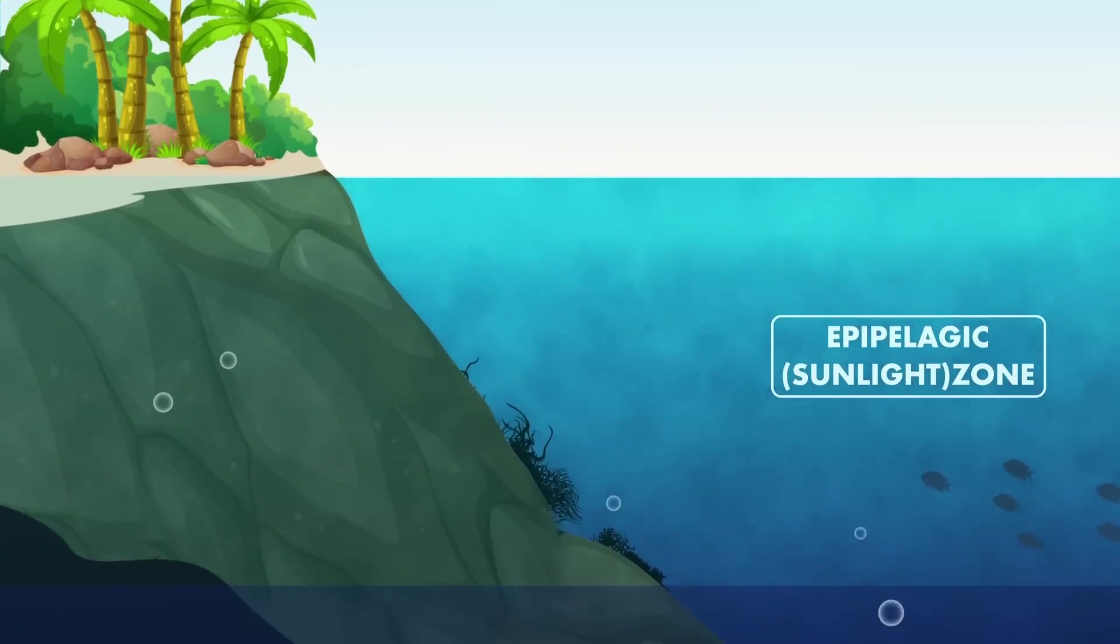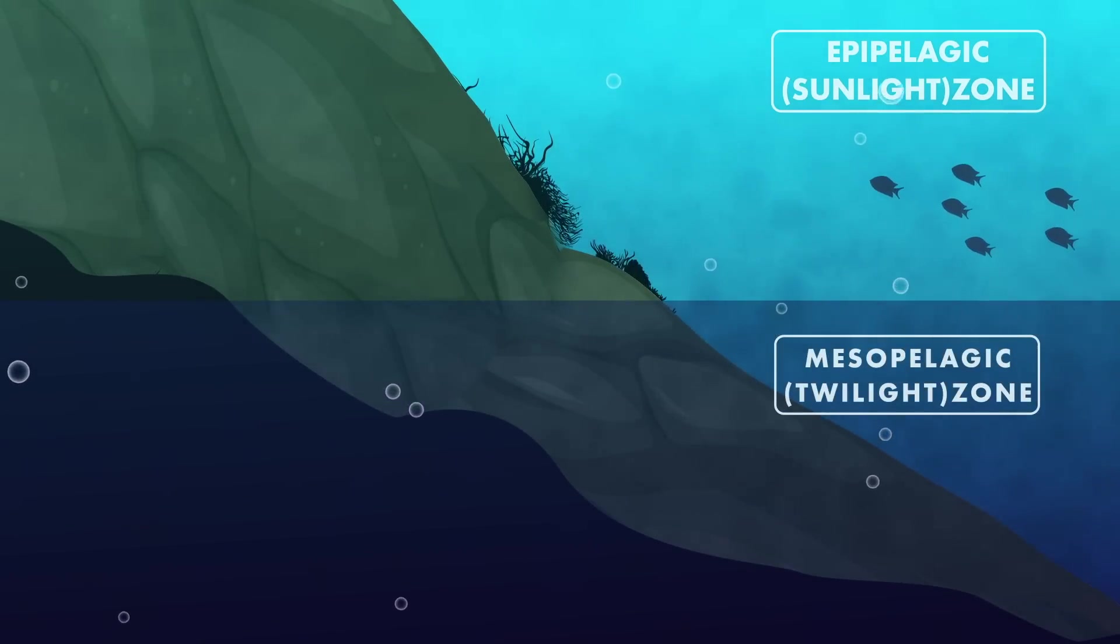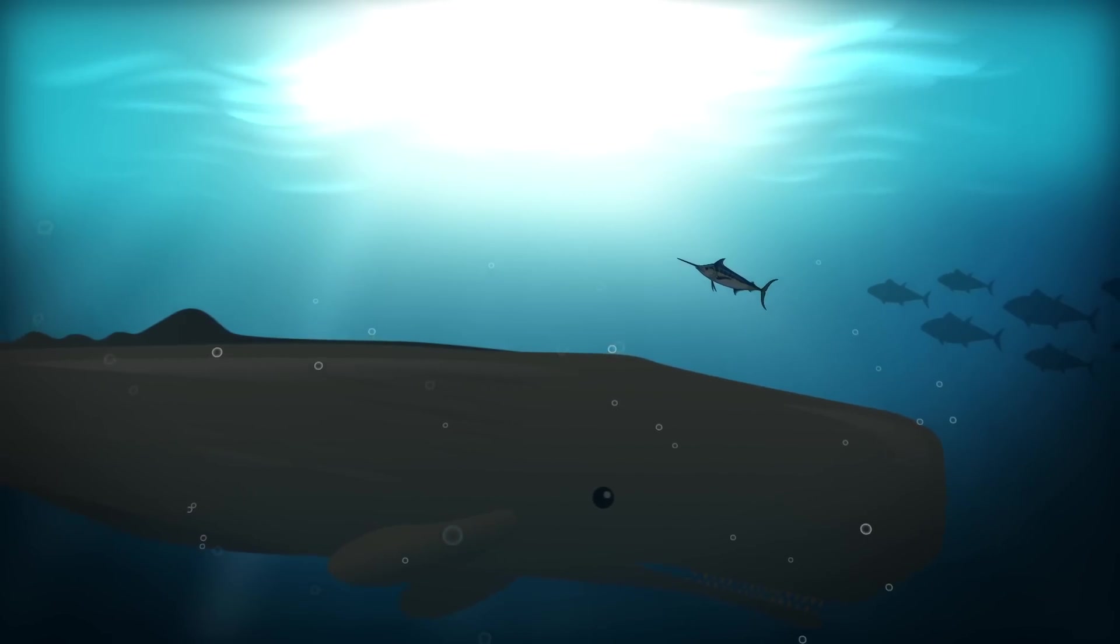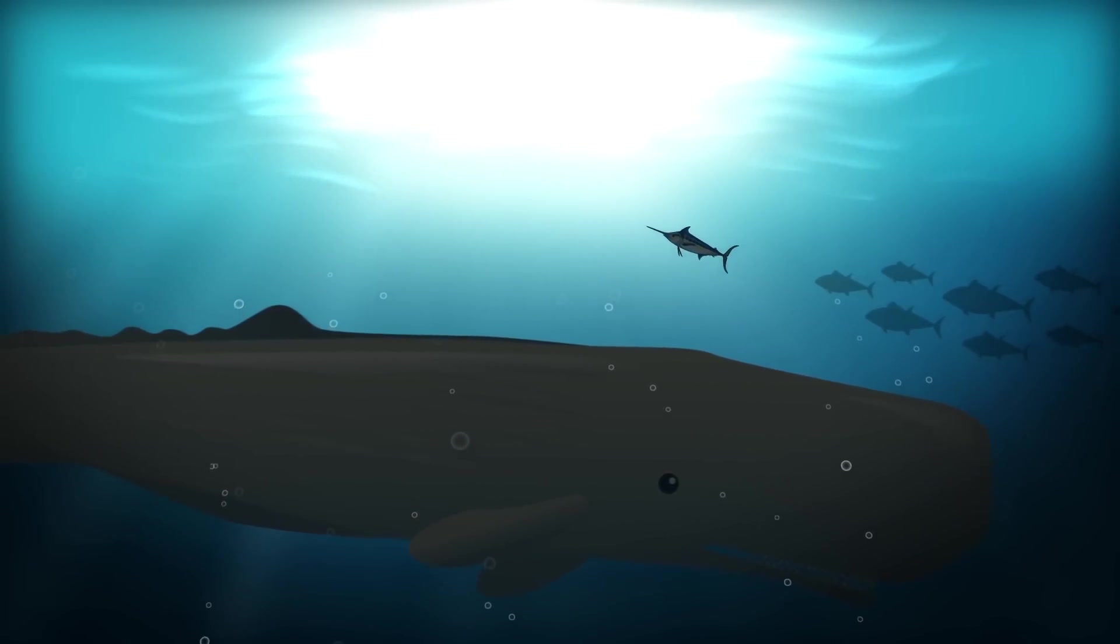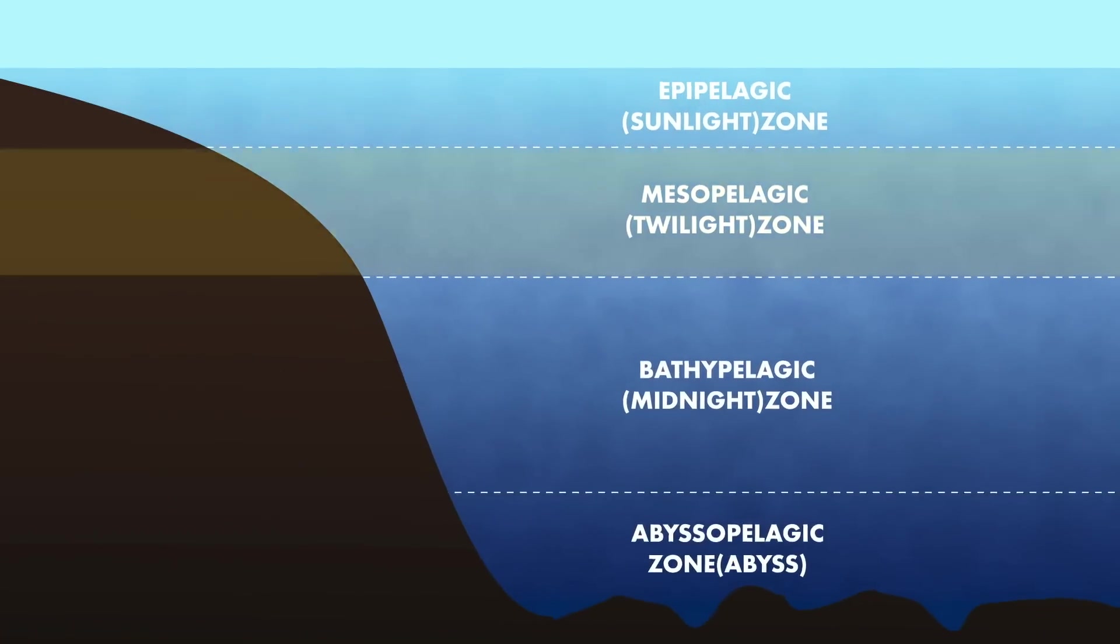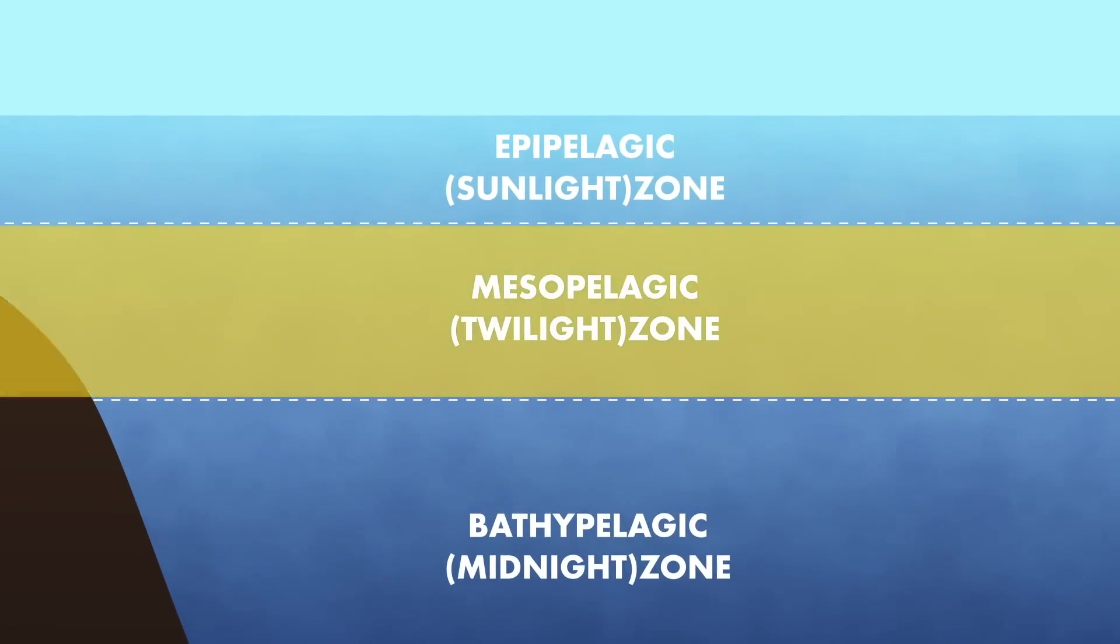Below the sunlight zone, the ocean becomes dimmer, colder and more barren. At these depths, light from the surface begins to dwindle, turning once sunny waters into a region of grey and gloom. The mesopelagic or twilight zone is a broad boundary between the ocean shallows and the deeper and darker worlds below.